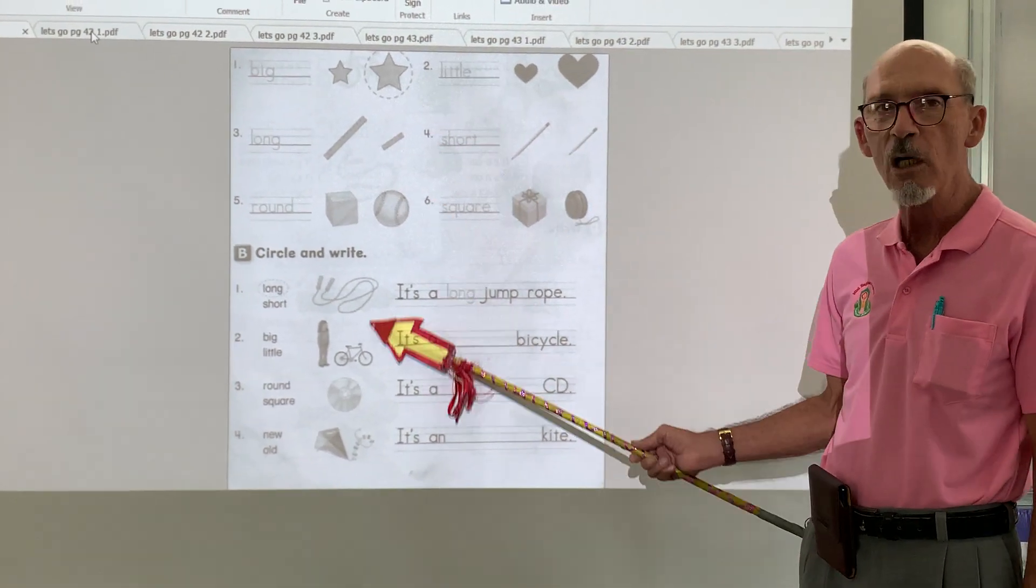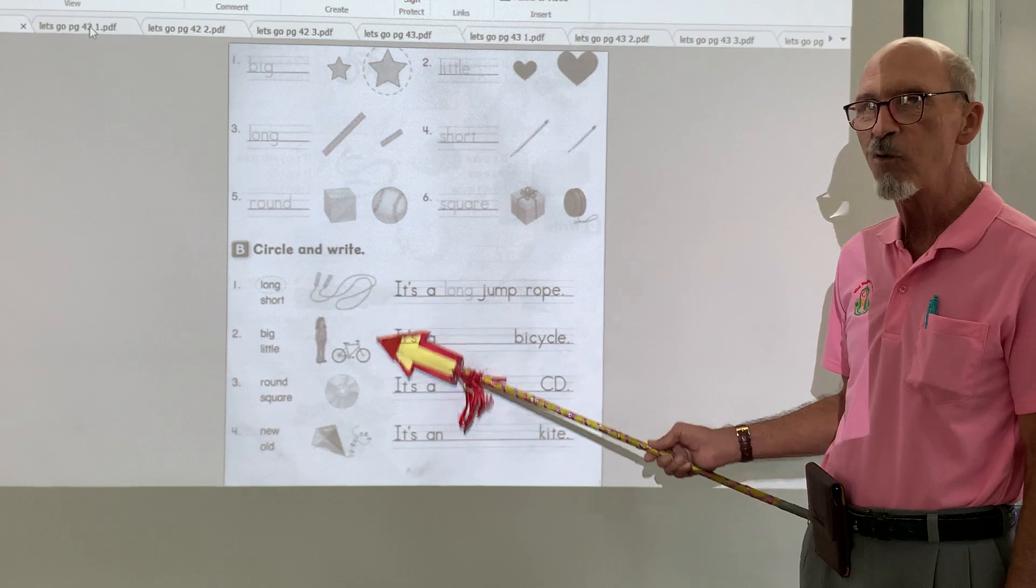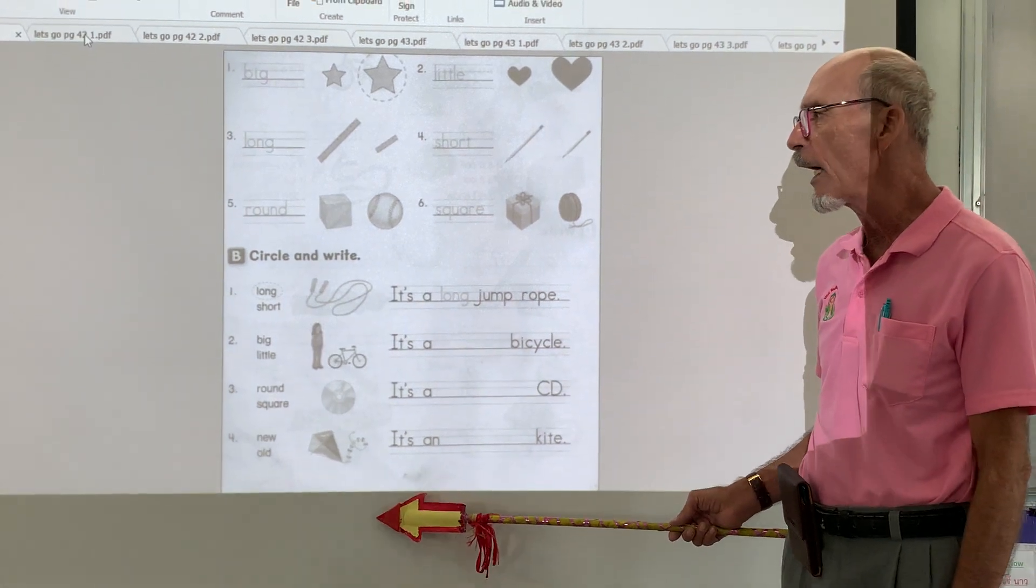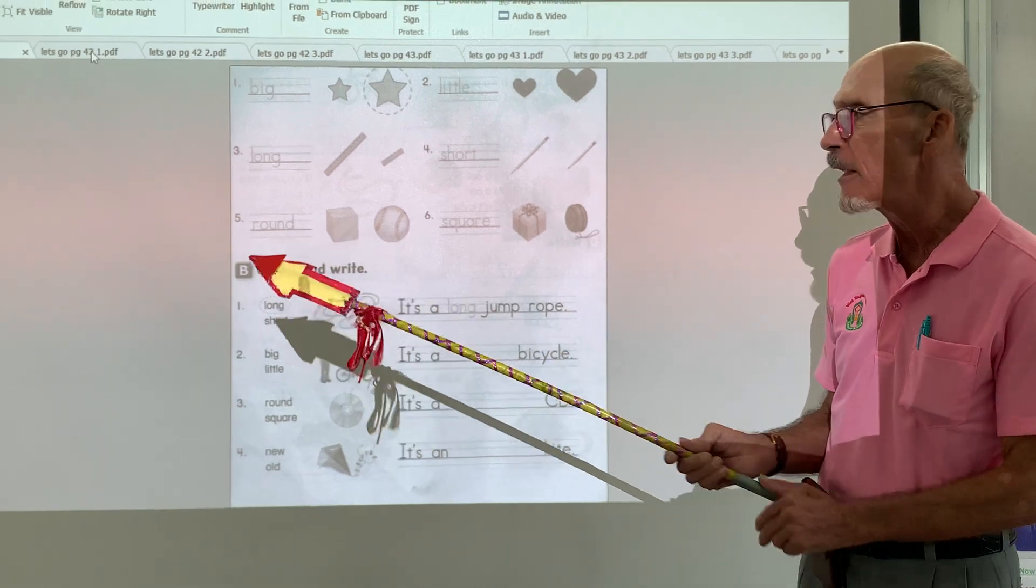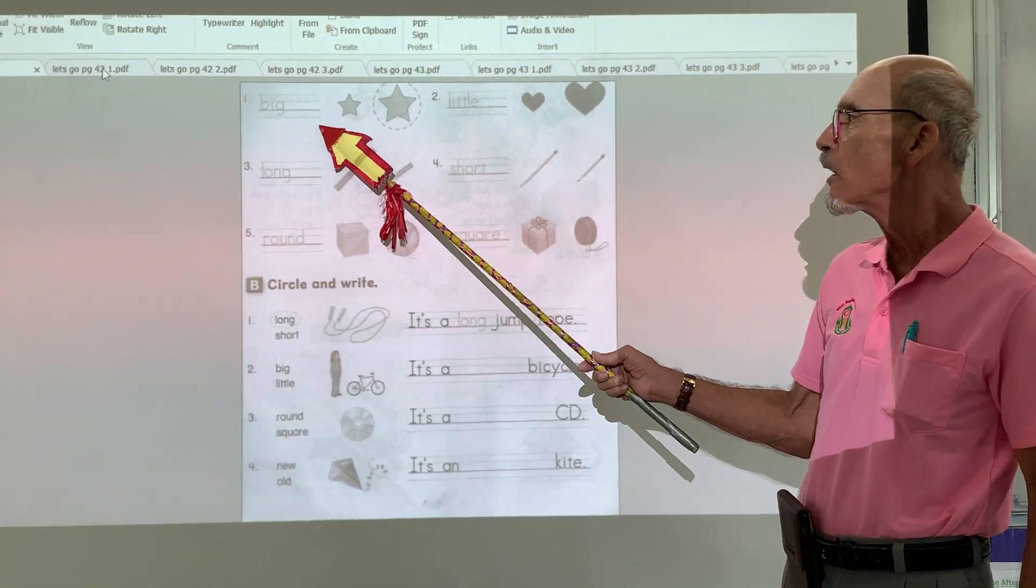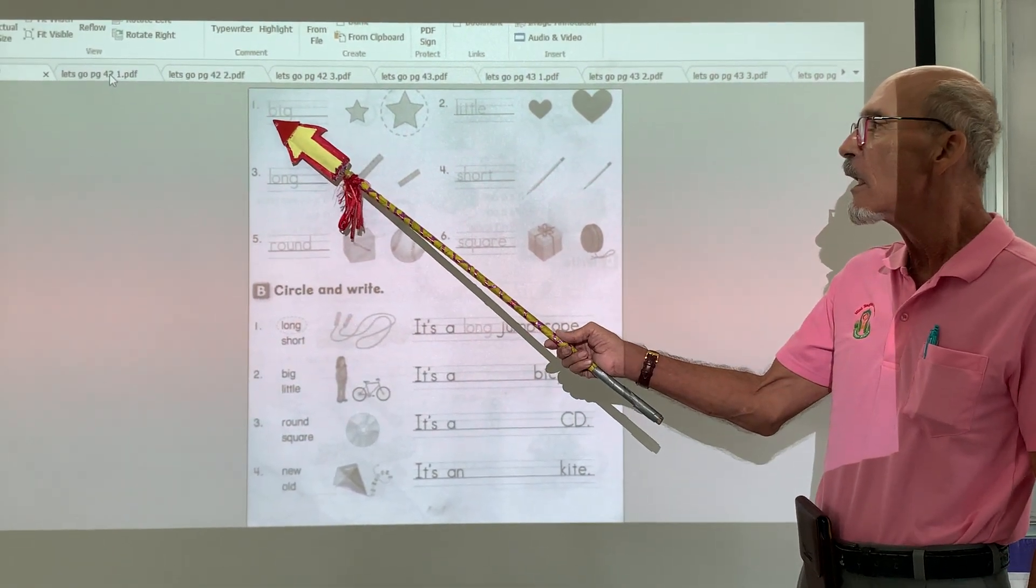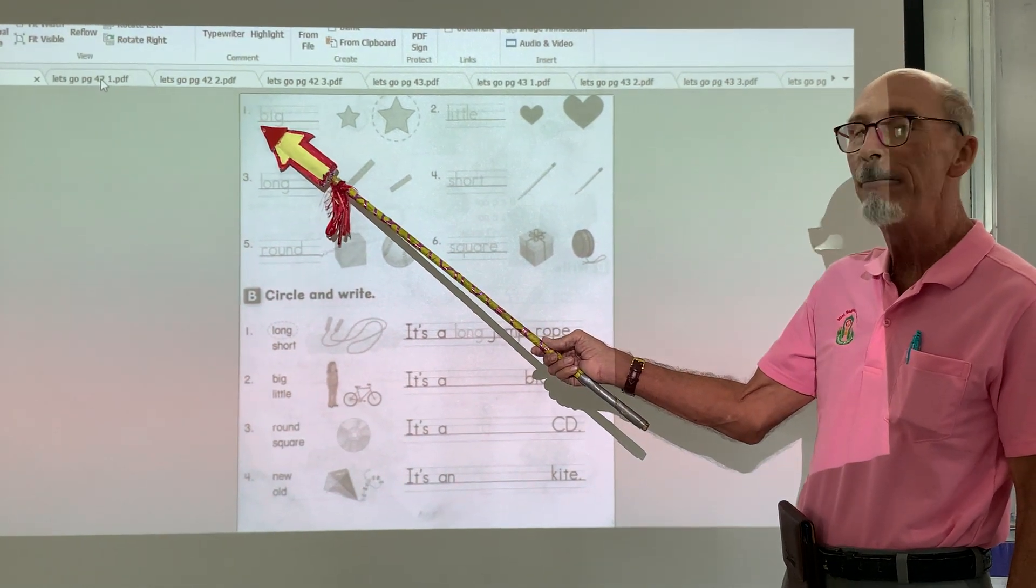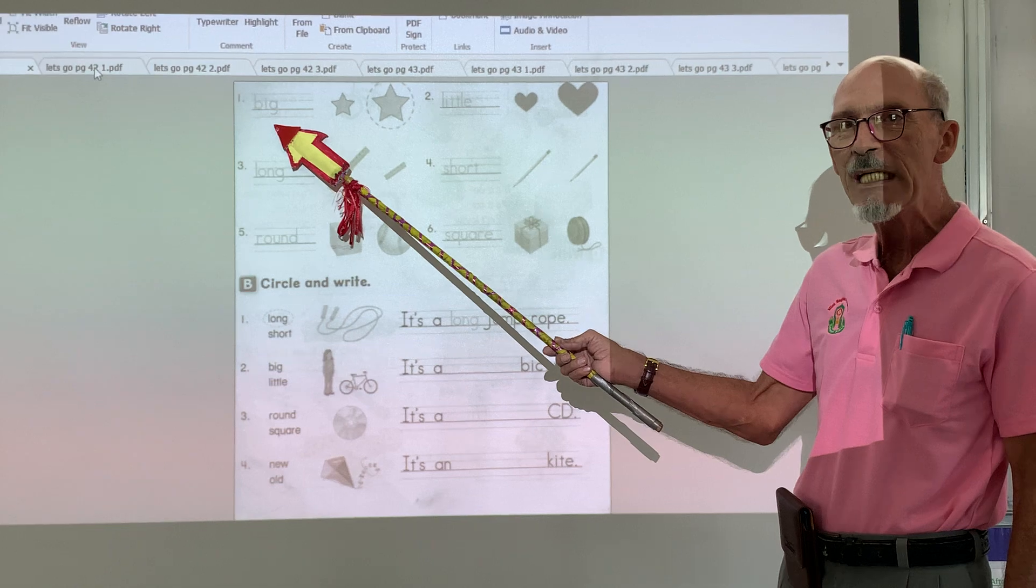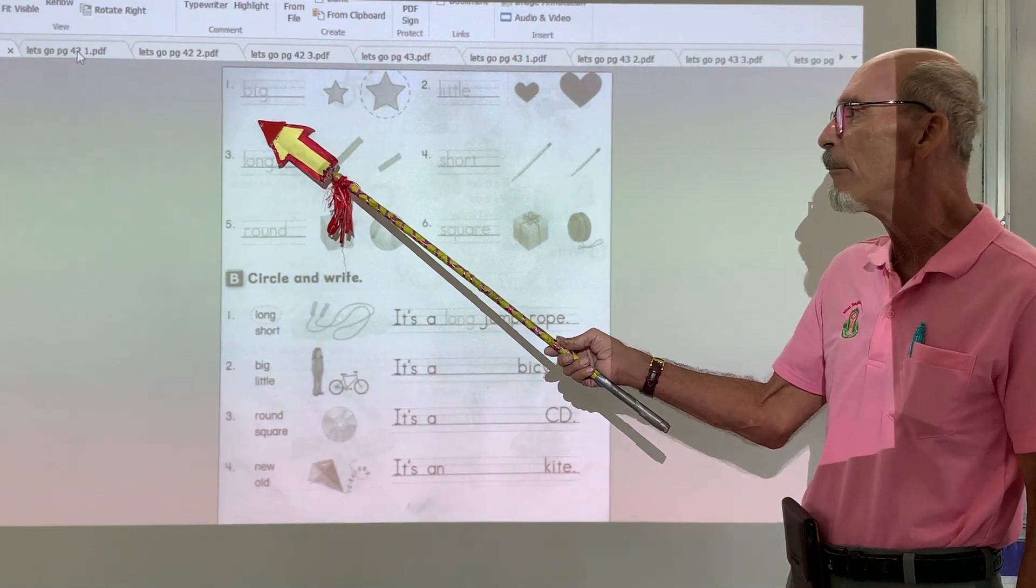This is your Let's Go textbook, page 42, okay? And we're just going to talk about some vocabulary. Looking at these words, look at number one. B-I-G, big.